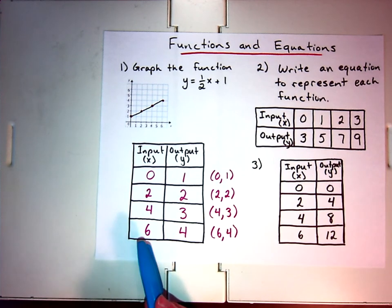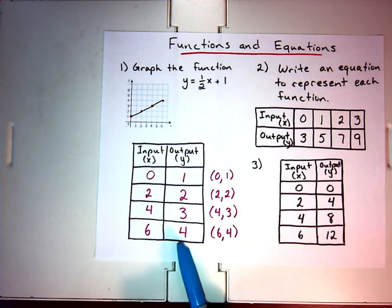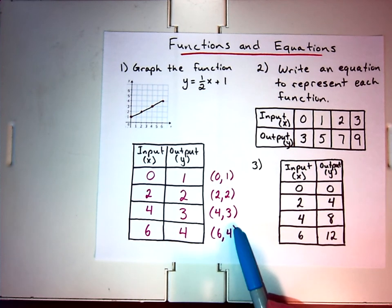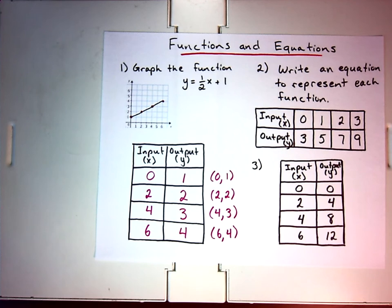So we filled in a table or recreated a table, and we tested some values for the input. We got the values of the output. And then we ended up creating ordered pairs. For number 2, it says, write an equation to represent each function. And that instruction is going to work for numbers 2 and 3.